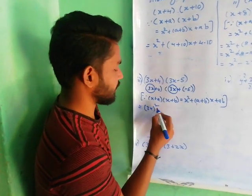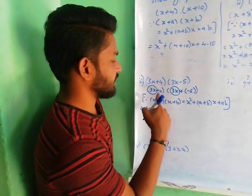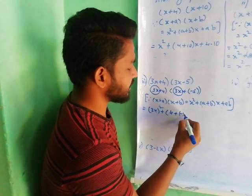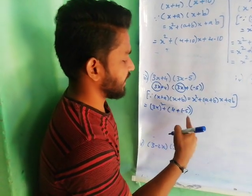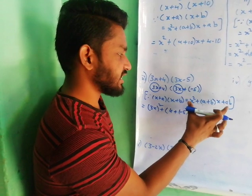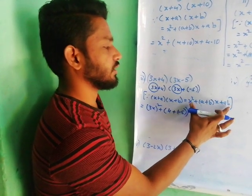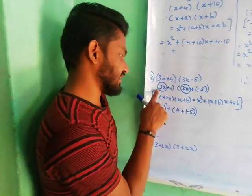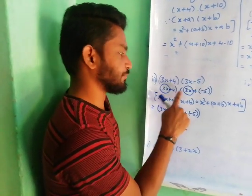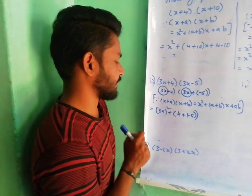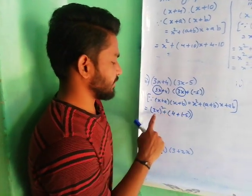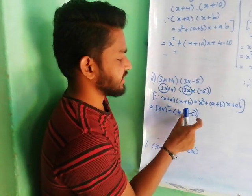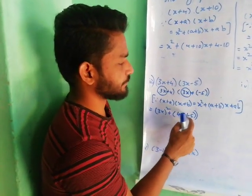So, 3x whole square plus a plus b. a value is 4, b value is minus 5. a plus b is the same — just substituting in this formula. Here x is 3x, a value is 4, b value is minus 5. So x square means 3x whole square, plus a plus b: 4 plus b value minus 5.